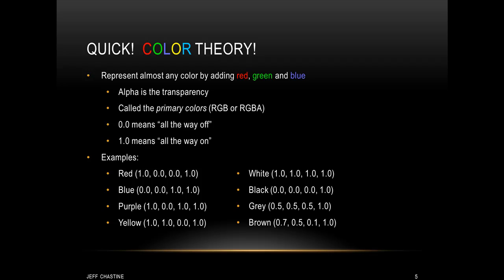First of all, you need to understand that we can represent almost any color just by adding components of red, green, and blue. You might have also heard of something called alpha, and this is simply the transparency of the color or how much you can see through it. Red, green, and blue are called the primary colors, and a lot of times they're denoted as R, G, and B. If you include the alpha, it's RGBA. Each one of these components has an independent value where 0.0 means it's all the way off, and 1.0 means it's all the way on.